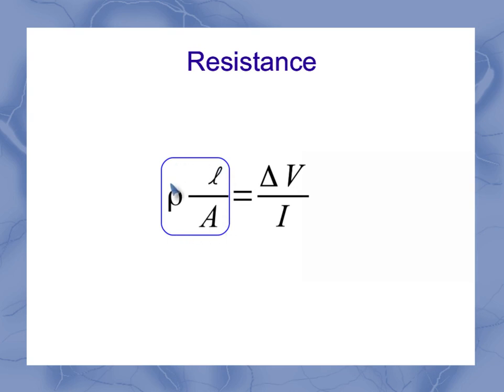And this side of the equation over here is equal to the voltage over the current, which means this must be equal to my resistance.